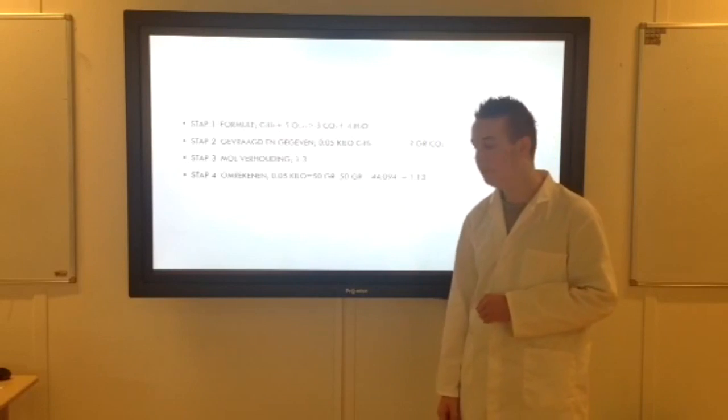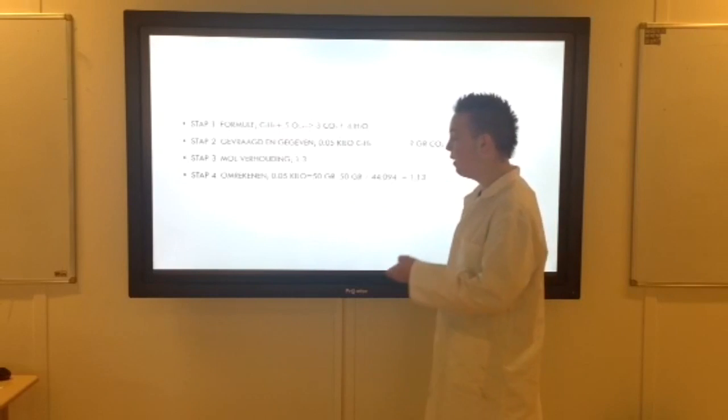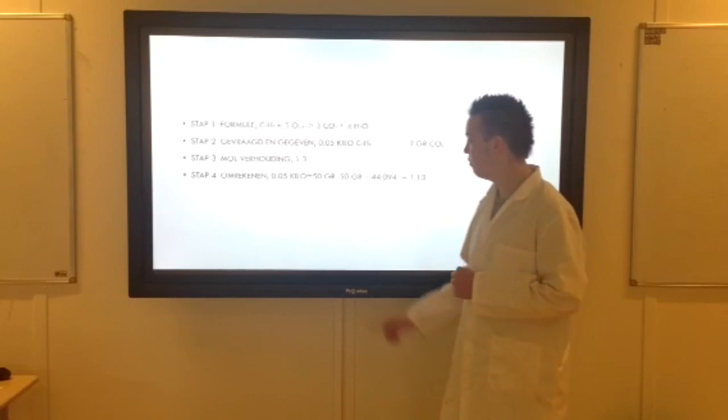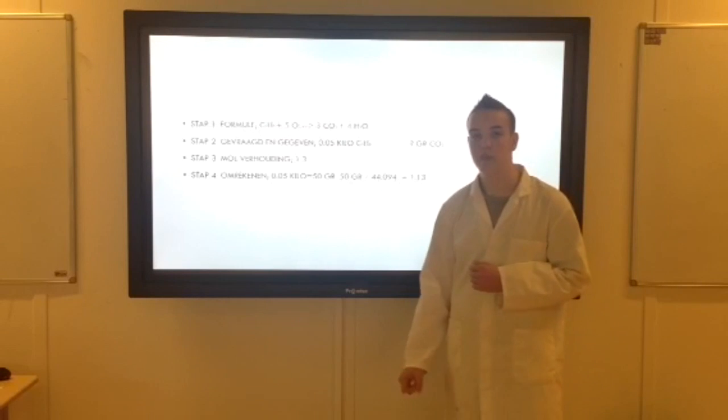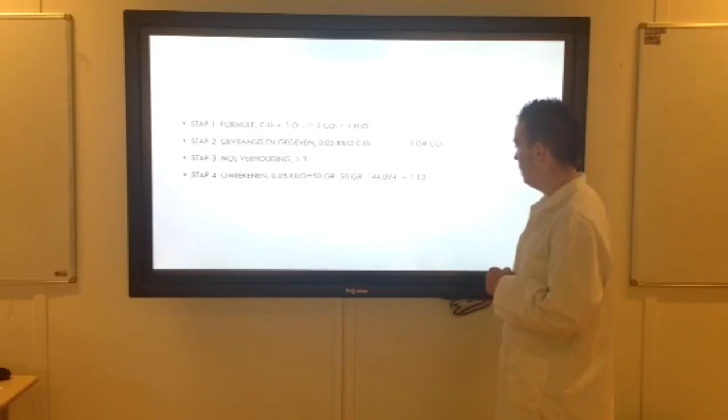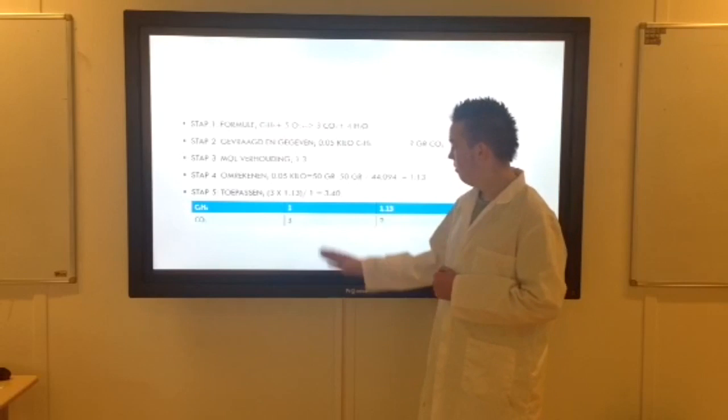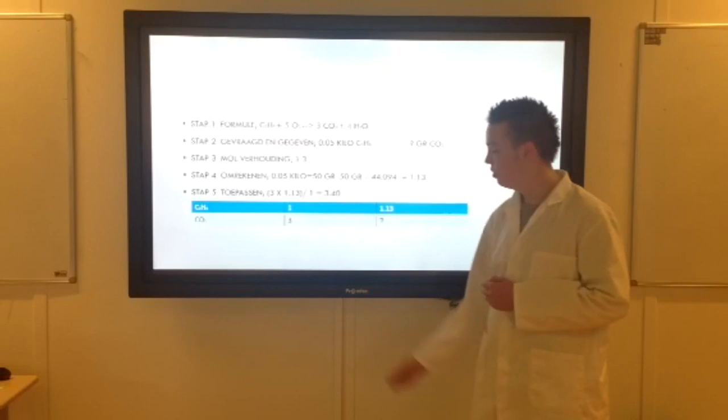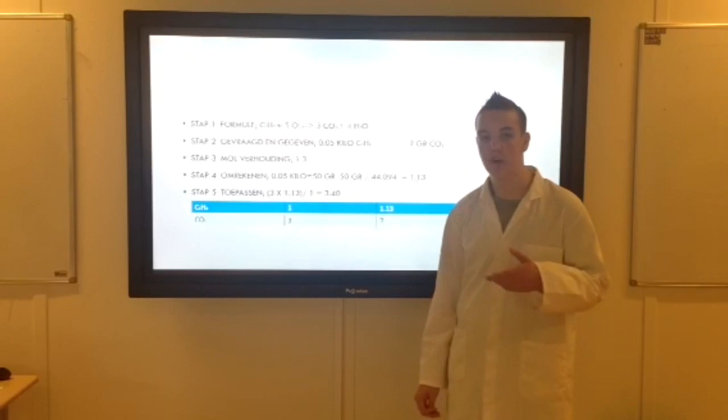Gaan we naar stap 4. Gaan we omrekenen. We weten 0,05 kilo is overal 50 gram. En dan delen we 50 gram door de molaire massa. Dat is in dit geval 44,094. Dan komt 1,13 uit. Gaan we door naar stap 5. Weer een mooi tabelletje. We weten hem, ik heb hem ingevuld. 3 keer 1,13 delen door 1 is 3,40.